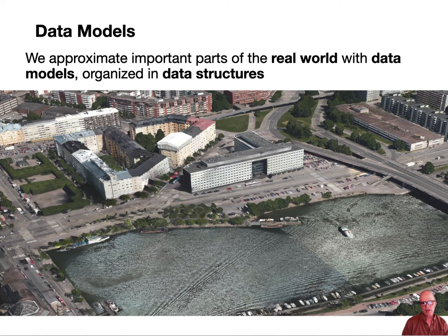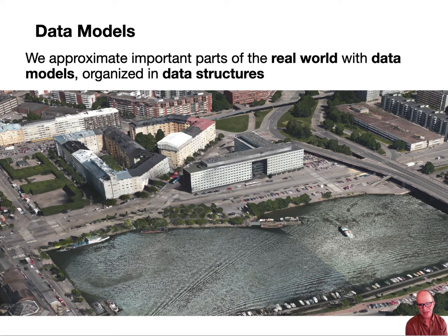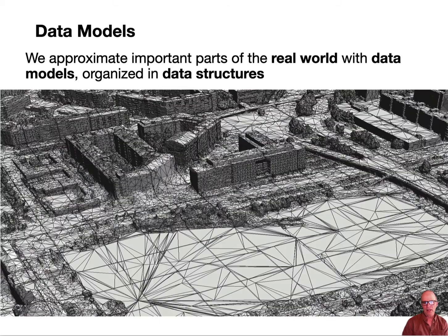Data models are how we conceptually view our collection of data that describe features. They sit somewhere between the real world and the data structures the computer stores. Here's an example: a three-dimensional rendering of buildings and a landscape that I might want to manipulate. Underneath that rendering is a triangulated irregular network, which is an example of a fairly specialized kind of data model.